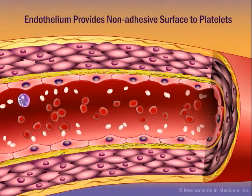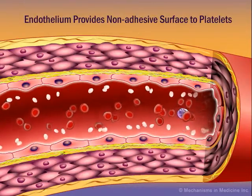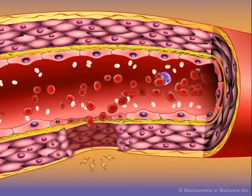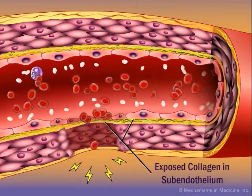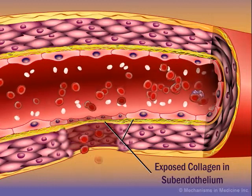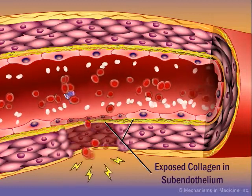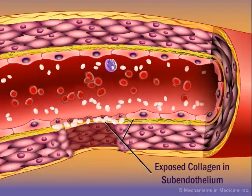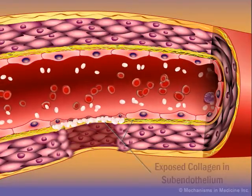The normal endothelium provides a non-adhesive surface to circulating platelets. However, when vessel wall injury occurs, for example by cutting or severing of a vessel, or as shown here by a puncture, and there is endothelial damage, the initial response of platelets is that of adhesion to collagen fibers in the exposed subendothelium.